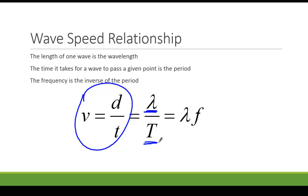And in physics we like to have all of our equations on one line, and that leaves us with v equals lambda times f. So wave speed equals wavelength times frequency.